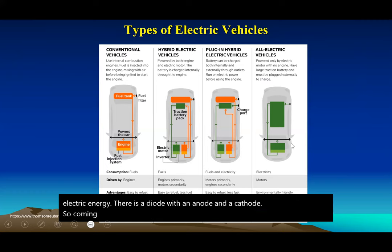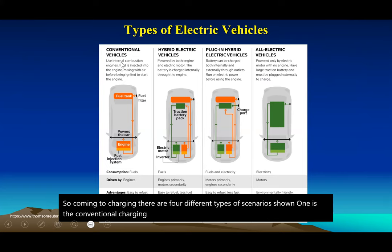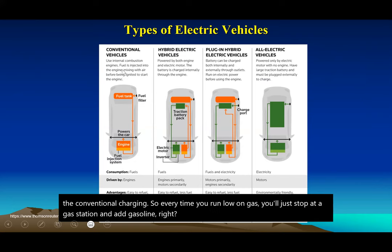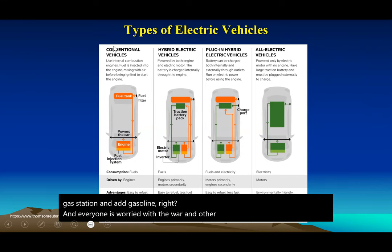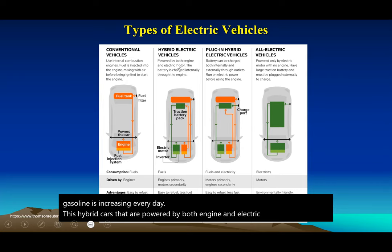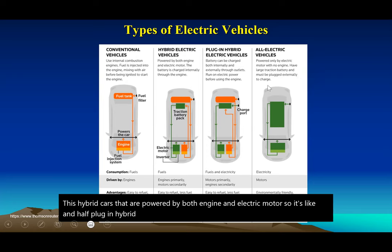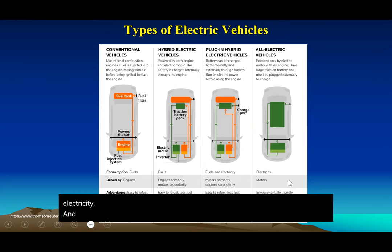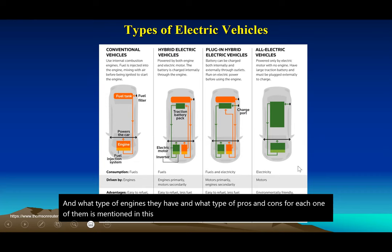There are four different charging scenarios. Conventional charging means stopping at a gas station to add gasoline — but gasoline prices are increasing. Hybrid cars are powered by both an engine and electric motor. Plug-in hybrid vehicles are also available. All-electric vehicles are powered only by electricity and are the most environmentally friendly, as shown in this comparison table of engine types and their pros and cons.